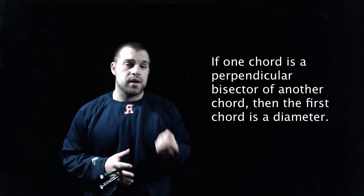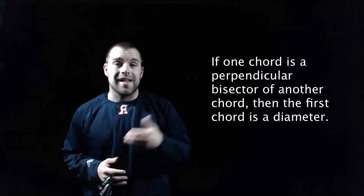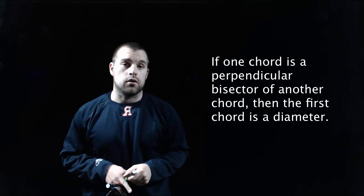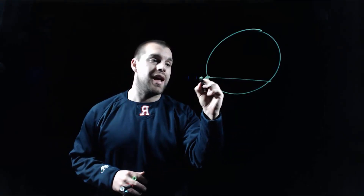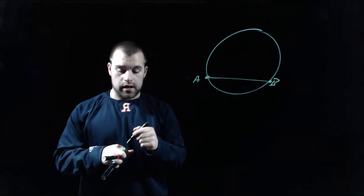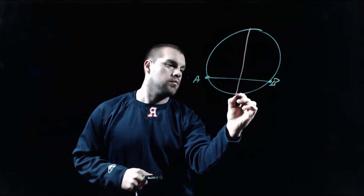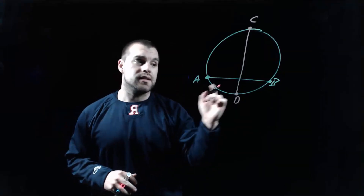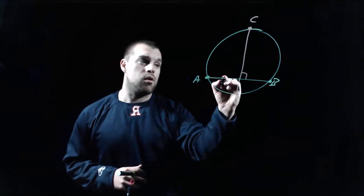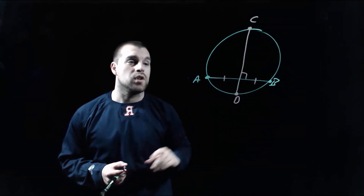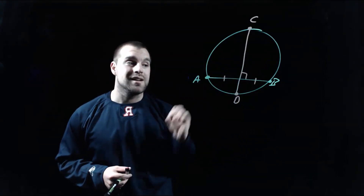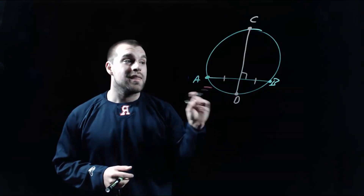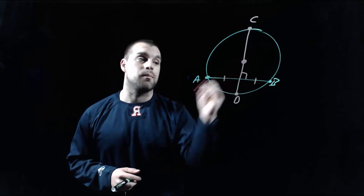Our next property with chords deals with perpendicular bisectors. If a chord is a perpendicular bisector of another chord, then that first chord has to be a diameter of our circle. For example, if we draw chord AB in a circle and then draw chord CD perpendicular to AB and splitting AB in half, since CD is a perpendicular bisector — both perpendicular and cutting the chord in half — CD has to be a diameter and must go through the center point of our circle.